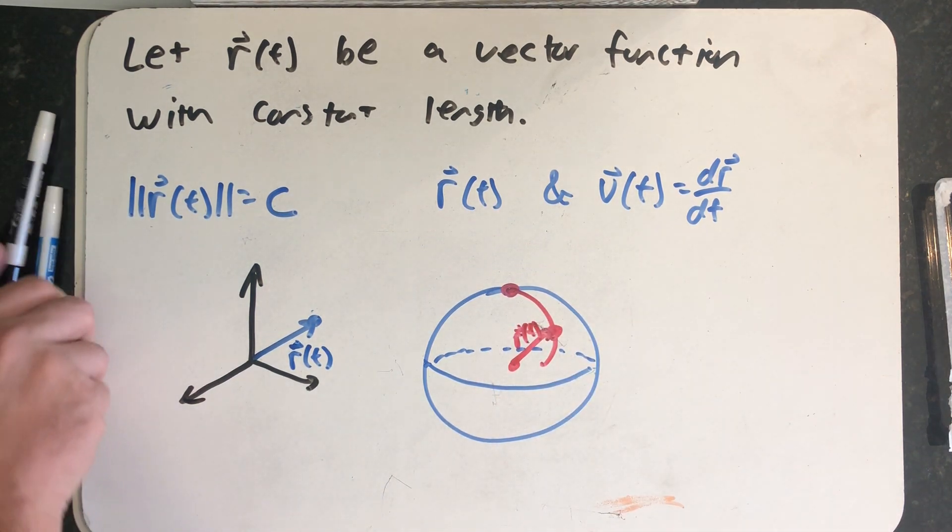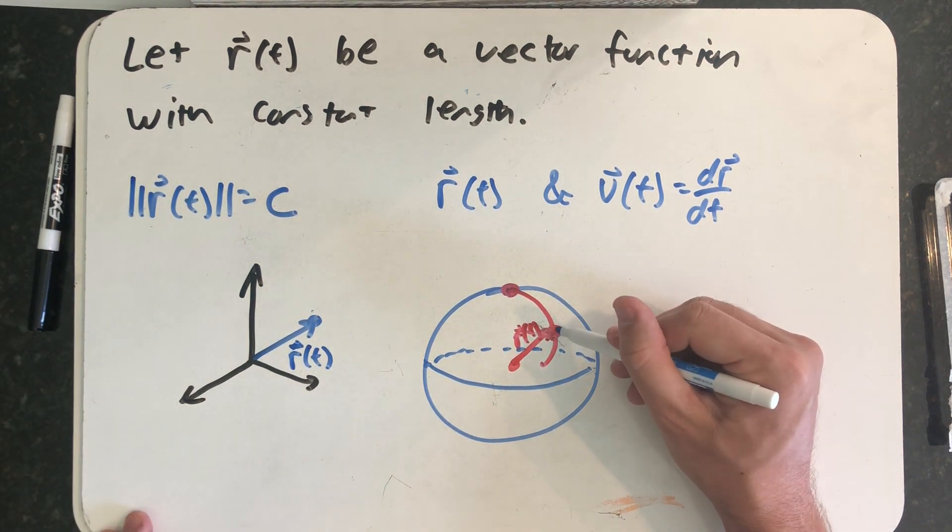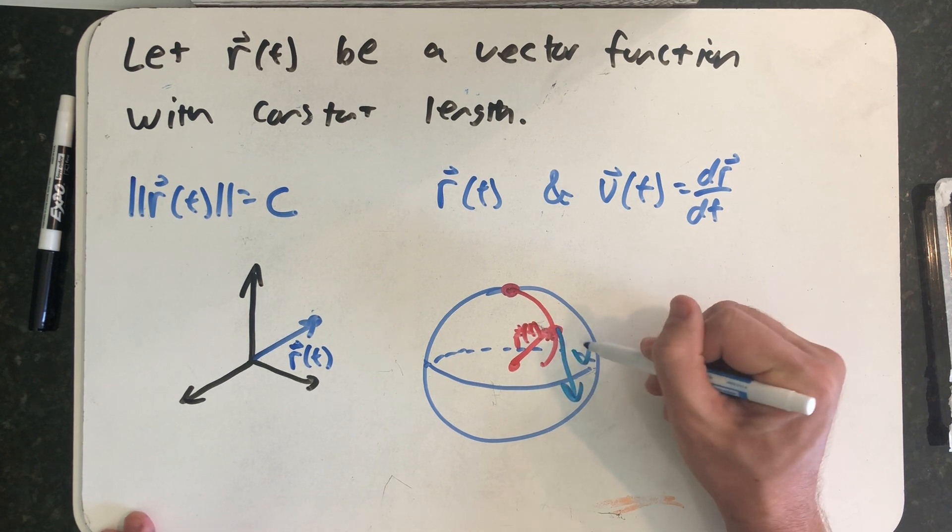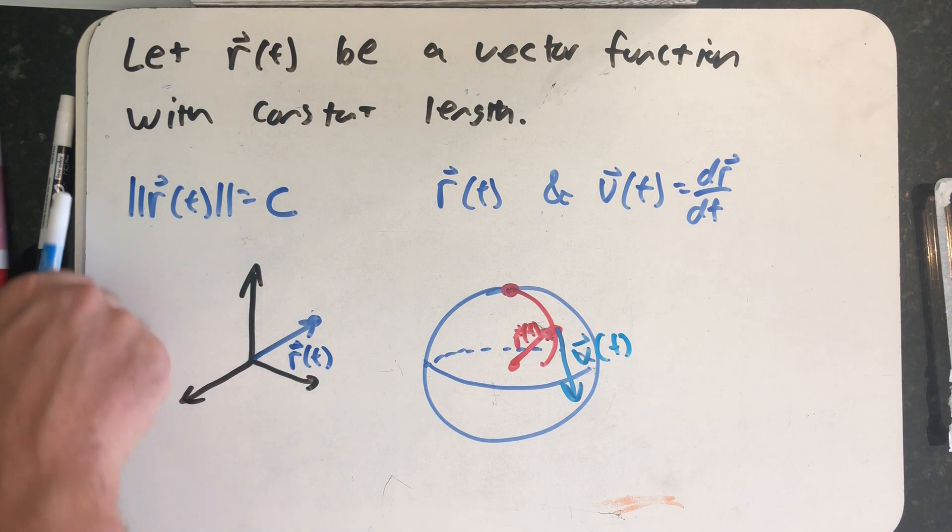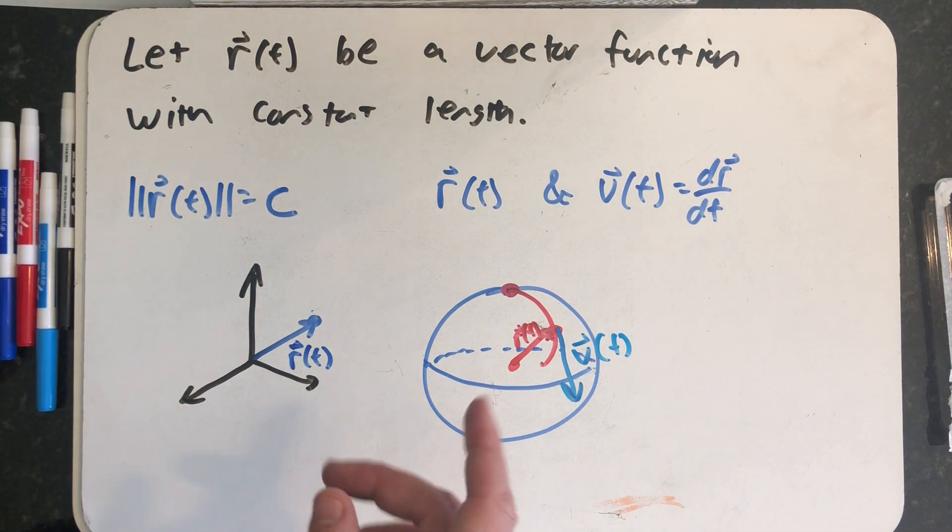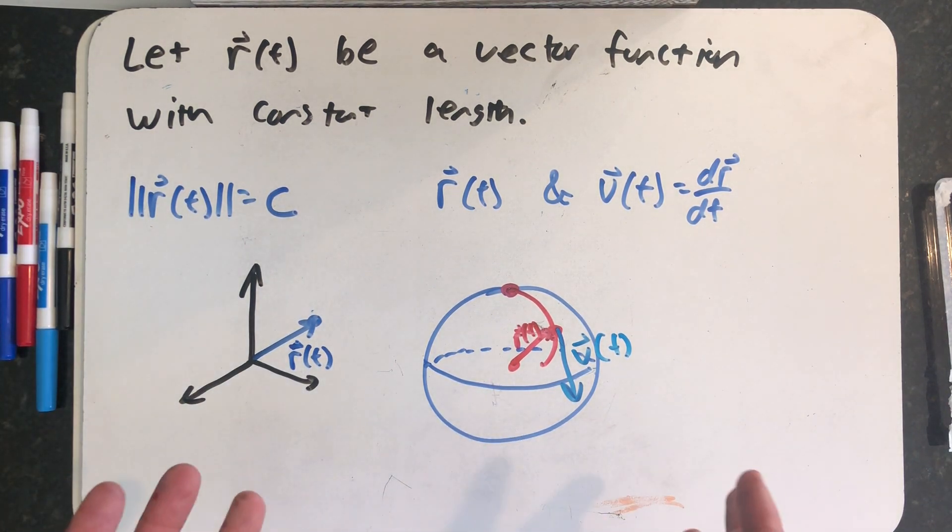And the velocity vector, which has to be tangent to the curve and therefore tangent to the sphere. What's the relationship between those two vectors? What's the relationship between the radius of the sphere and a tangent line to the sphere?